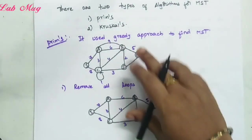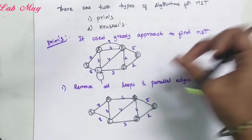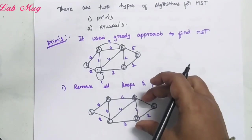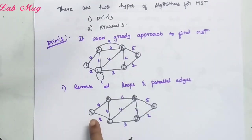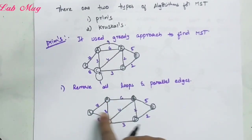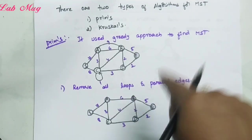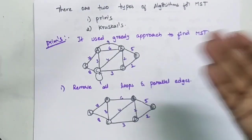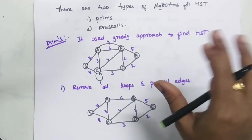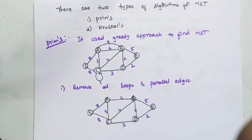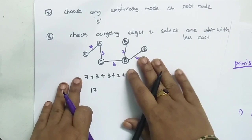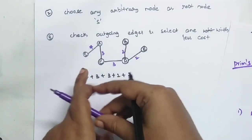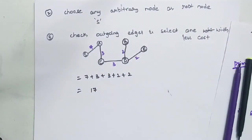So let's recap carefully. In Prim's algorithm, the first point is removing all loops and parallel edges. After that, the main graph remains. From this graph, choose any starting vertex. From that starting vertex, find the edge with the least weight and form a connection. Keep checking for the next least weight edge, and if taking that edge would form a loop, stop. Finally, calculate the total weights for all edges. This is Prim's algorithm. In the next class, we will cover Kruskal's algorithm. Thank you.